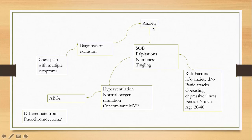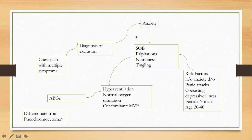If you evaluate the patient and do further testing, you may find pheochromocytoma, though this is not very common — anxiety is far more common in the general population. Treatment for panic disorder or anxiety with concomitant mitral valve prolapse includes behavioral therapy and SSRIs, plus beta blockers to help control heart rate.